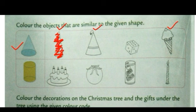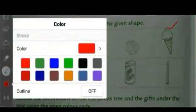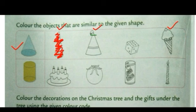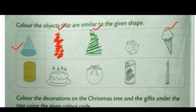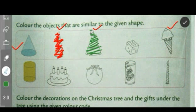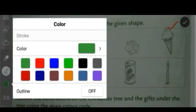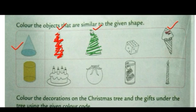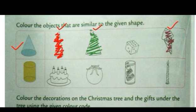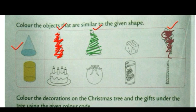I will color it with red, then I will use green color to color this birthday cap, then I will use brown color. This is the way how you can color the objects that are similar to the given shape. You can try to color it neatly.